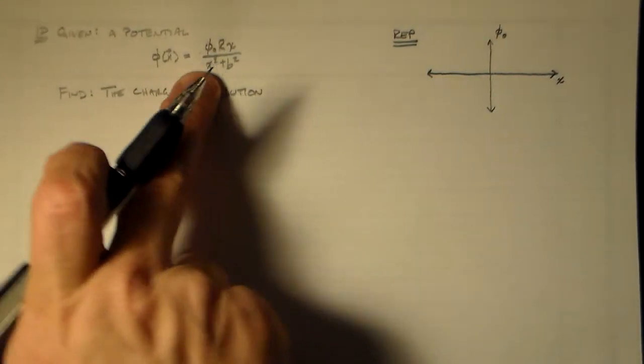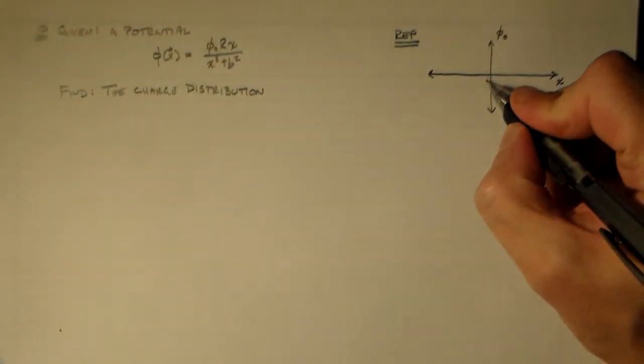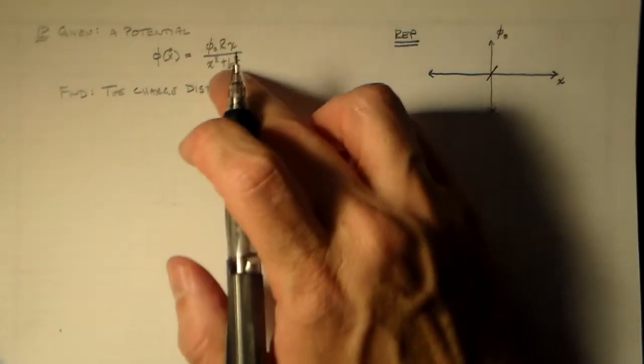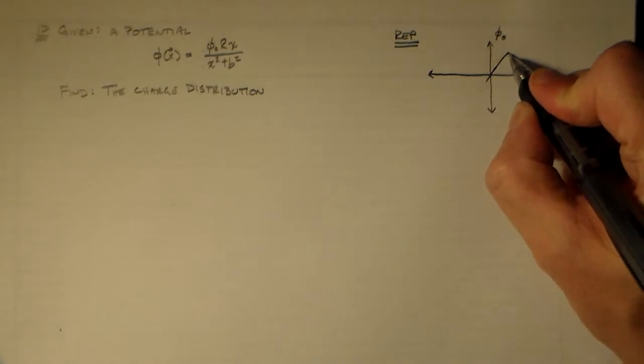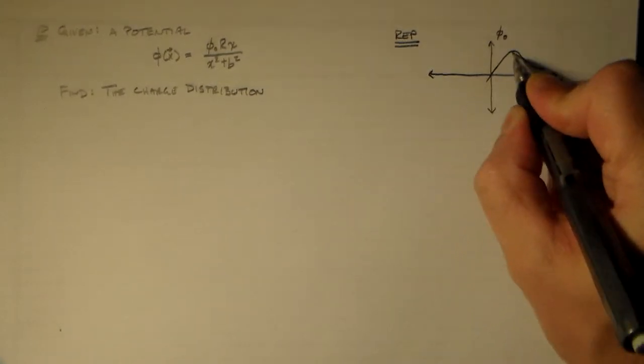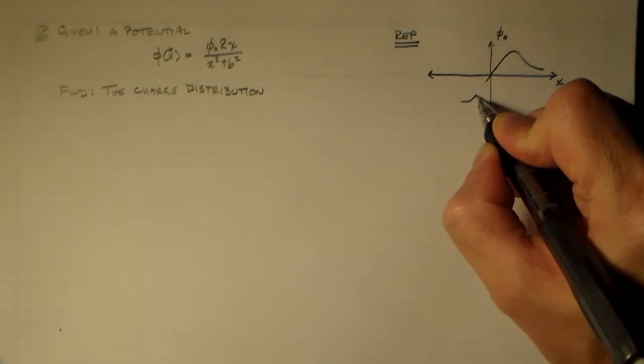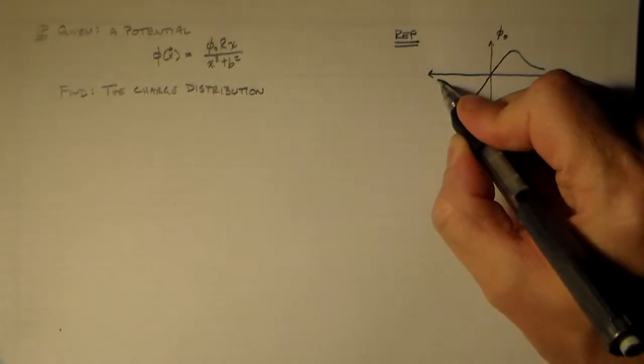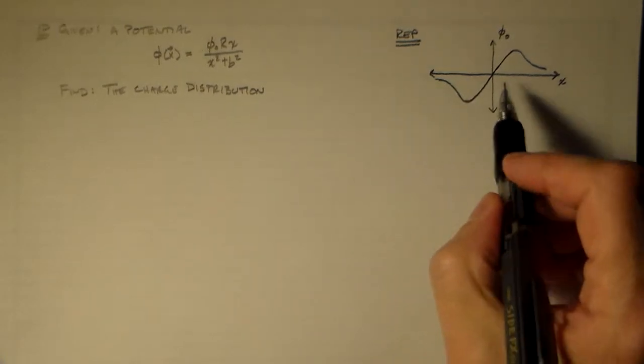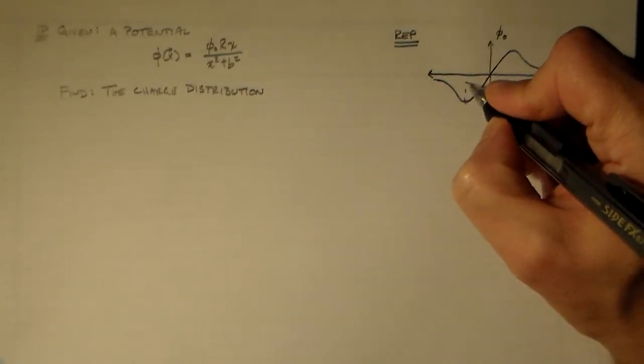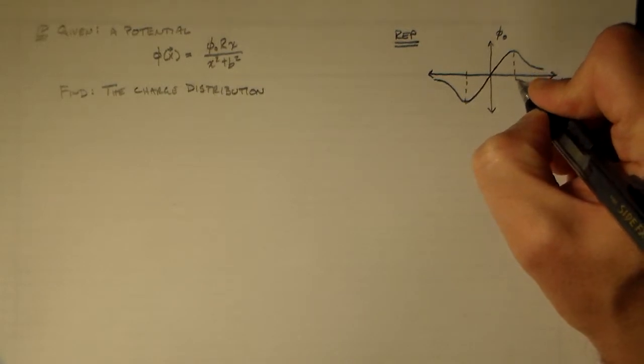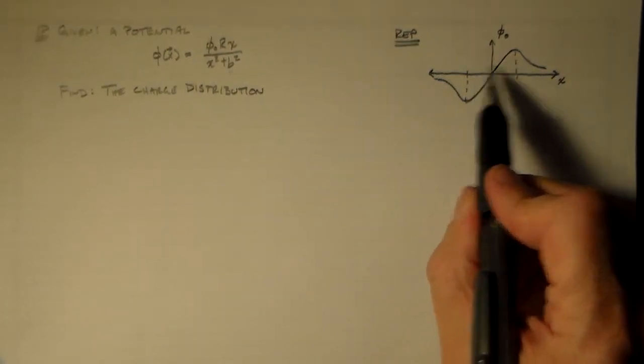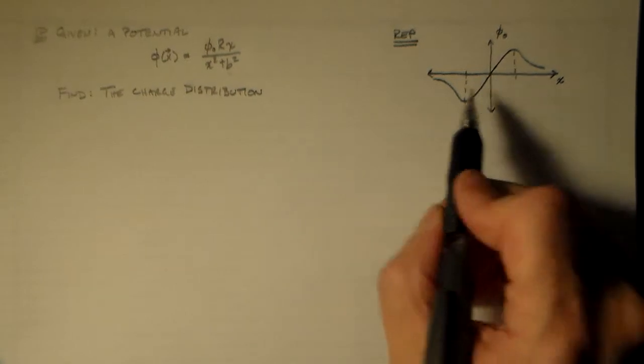So let's see, when x is small, we have sort of a linear function like this. And if x is large, we have basically 1 over x. So we have a function that's going to look something like that. It comes up, there's going to be some peak here. Ideally, we'd find that peak, I don't think I'll do that today. But ideally we'd find what this number here was, where exactly that was, and relate it to this parameter b.